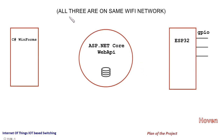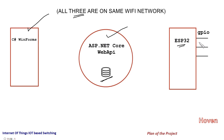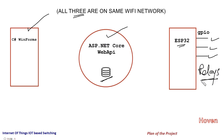First of all, it consists of three different projects. The first is a WinForms application. The second is an ASP.NET Core Web API application that will store the data of the project. And then we have an ESP32 module that has various wires going to electrical switches and electrical LEDs. I will be showing it with LEDs, but LEDs can be immediately connected to relays and solid state switches to control large power appliances as well.